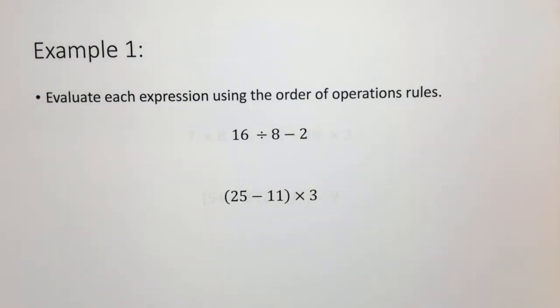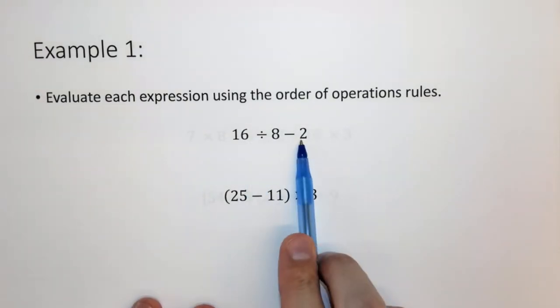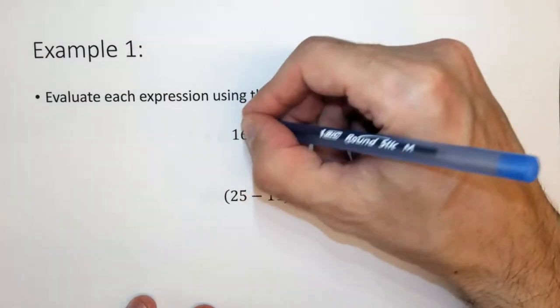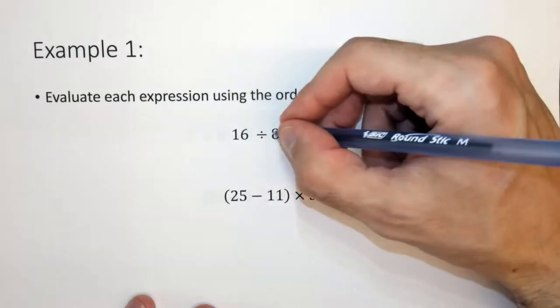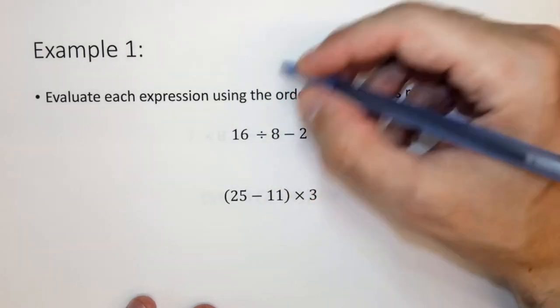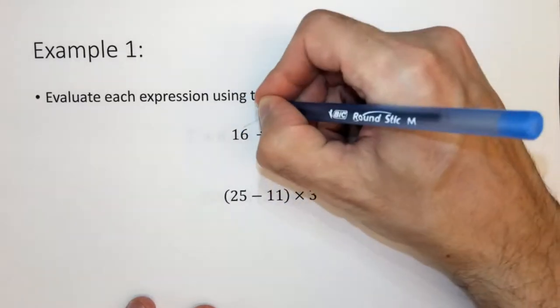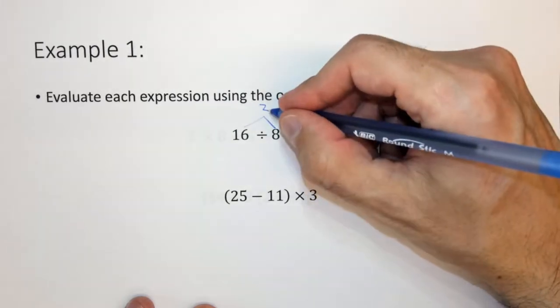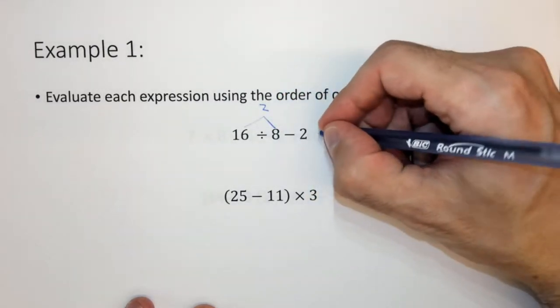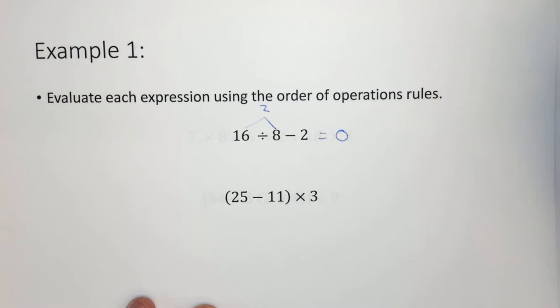So here we have an example of 16 divided by 8 minus 2. When we're doing this, we need to do the 16 divided by 8 first, so we divide before we add and subtract. So if we do 16 divided by 8, we find that it's 2. Now we take that 2 and we subtract 2, and we get 0 as the overall answer.